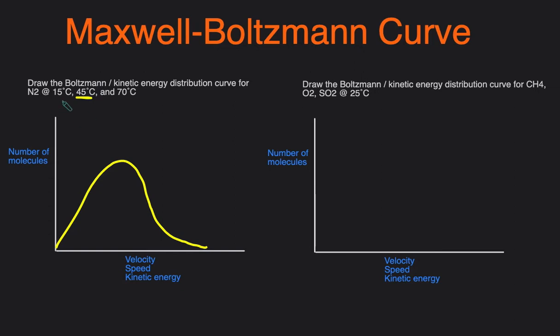What's important is how the other curves look in relation to the yellow curve. So let's draw the curve for 15°C. We know that temperature is directly related to kinetic energy, speed, and velocity. The higher the temperature, the faster the molecules move and the more energy they have; the lower the temperature, the less energy and the slower they move. So decreasing temperature from 45°C to 15°C means the velocity, speed, and kinetic energy should be shifted to the left because there's less of it.